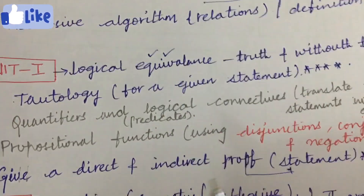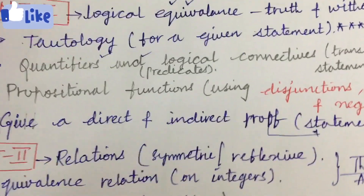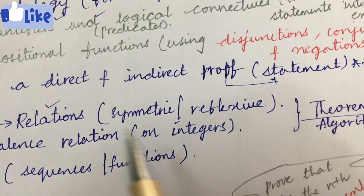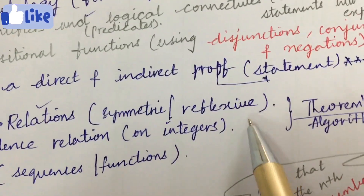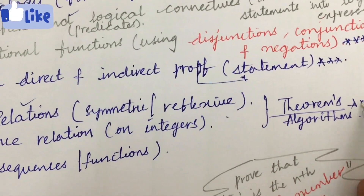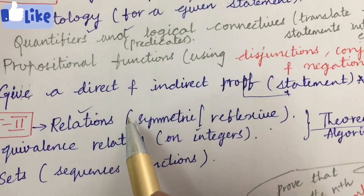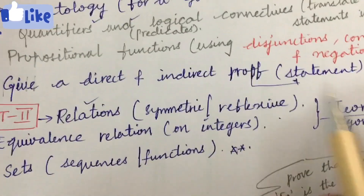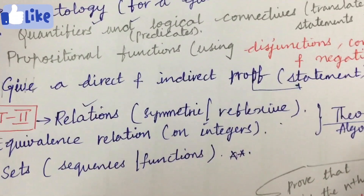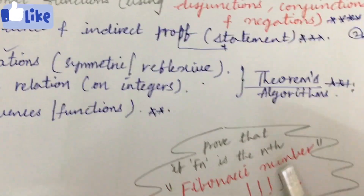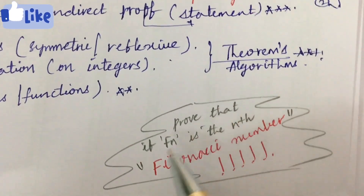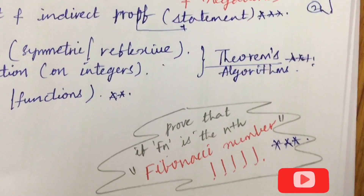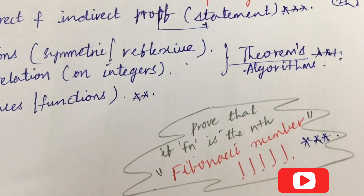These are sure-shot questions. You also need to work on relations — checking whether a given relation is symmetric or reflexive — and related theorems and algorithms will be asked. From relations you will get one question for sure, and from sets you will get one more question for sure. If you cover these concepts you will get five to six questions. Also, prove that f(n) is the nth Fibonacci number — this type of statement-and-proof question has been asked several times.